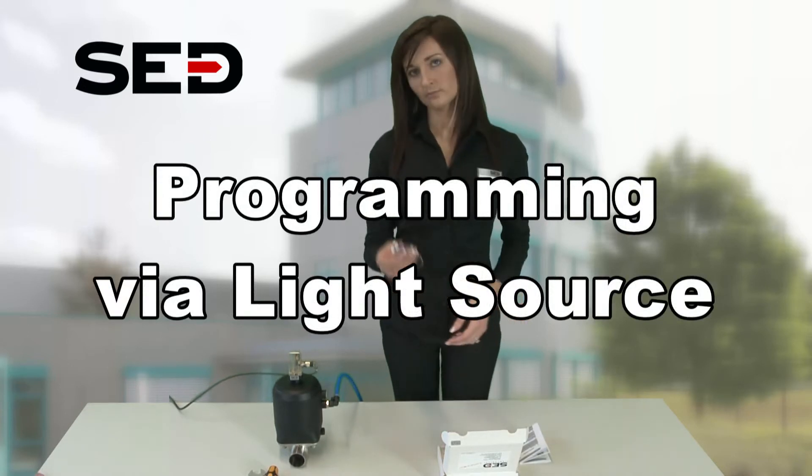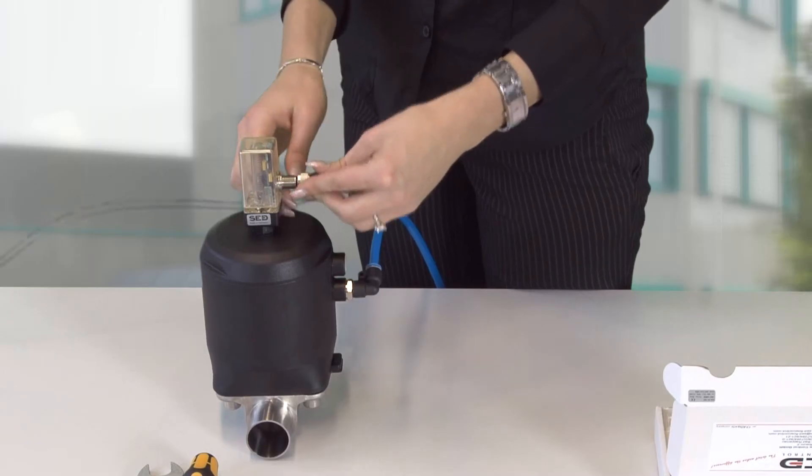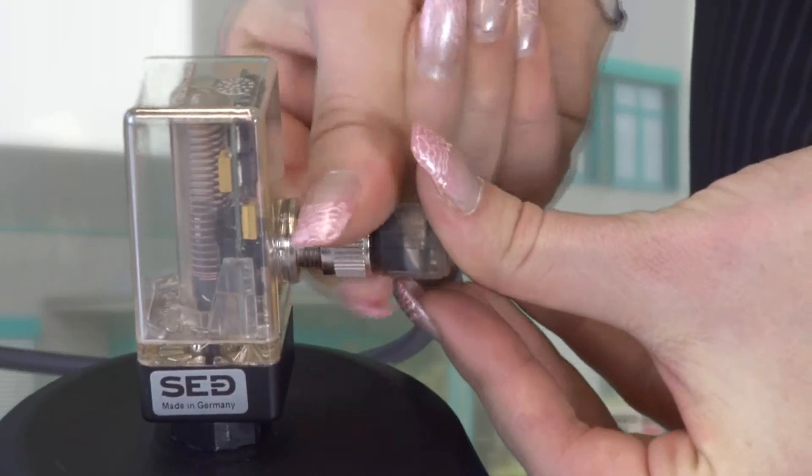For programming of the electrical limit switch via light, please take the flashlight out of the box. Now thread on the 5-pole plug and supply the electrical voltage to the limit switch.